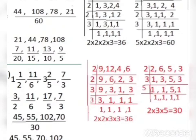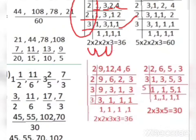We continue dividing. 2 and 4 are divisible by 2. 1 stays as it is (not divisible by 2), 3 stays as it is. Then 1×2=2, 2×2=4. Next, 2 and 3 are both prime numbers — they only appear in their own tables. We divide by 2 first: 1 as it is, 3 as it is, 1 as it is, 2÷2=1. Then divide by 3: 1 as it is, 3÷3=1, 1 as it is, 1 as it is. Now we multiply the prime factors: 2×2=4, 4×2=8, 8×3=24. So LCM = 24. There was a typing error earlier which is now corrected.